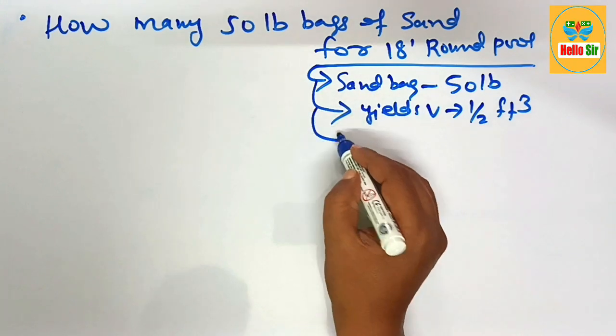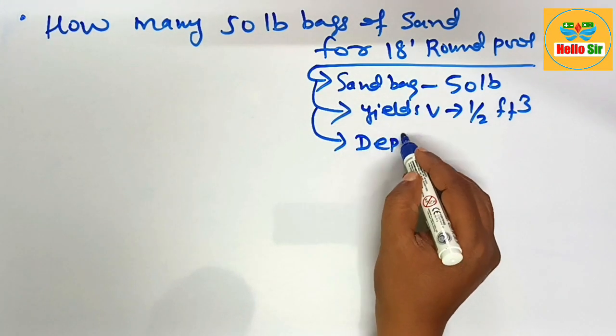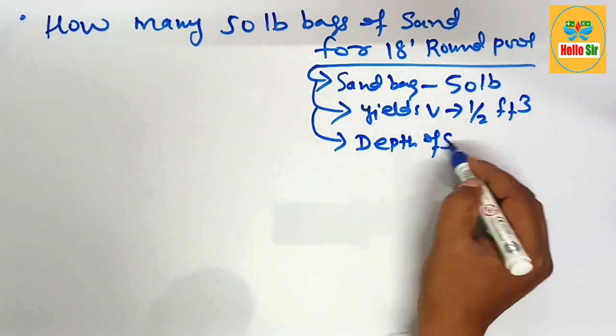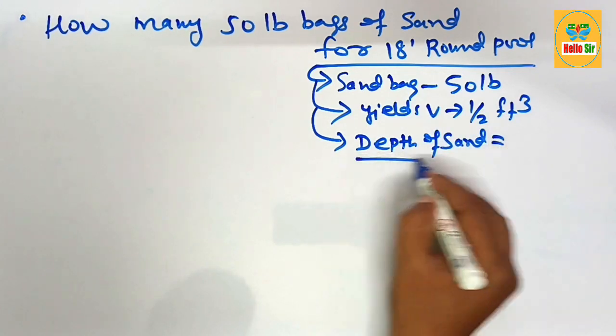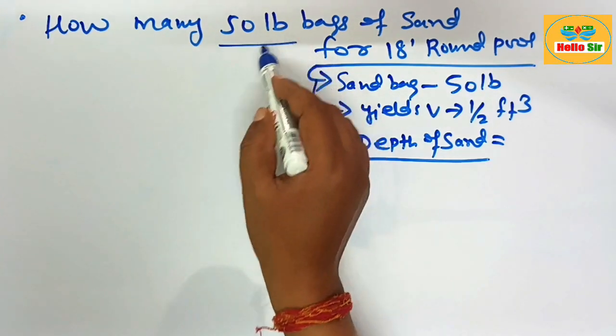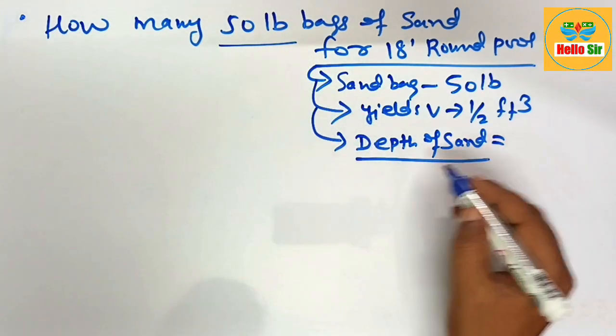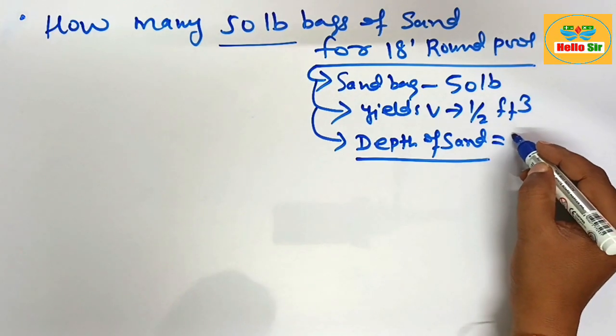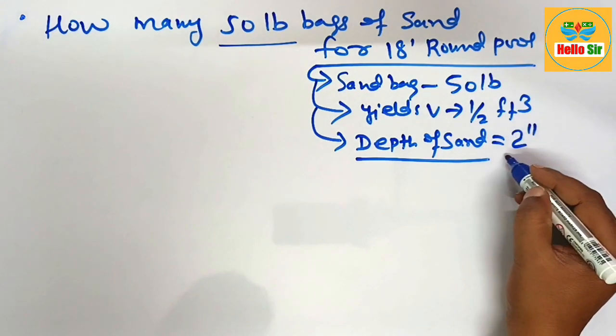What is the depth of sand? The depth of sand determines how many 50-pound bags of sand are required. Generally, the minimum depth of sand required is about 2 inches, which is equivalent to 0.167 feet.